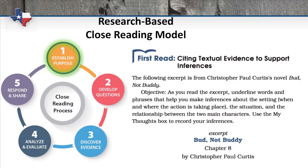First, we establish purpose by giving the students a concrete objective — something to look for and annotate as they read. In the first read of chapter one in the sixth grade student book, we invite students to read a selection from Bud Not Buddy and to underline words and phrases that can help us make inferences about the setting, the situation, and the relationship between the two main characters.